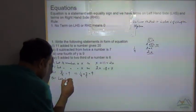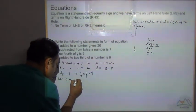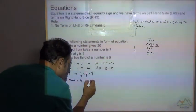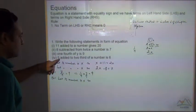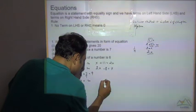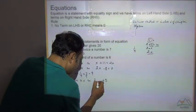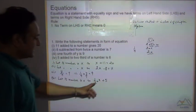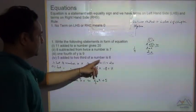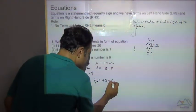Next, the number is x. 5 is added to 2 third of a number. 2 by 3 multiplied by x plus 5 is equal to 6.